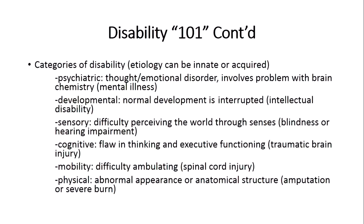And then there are physical disabilities, which involve abnormal appearance — either an anatomical structure, as in the case of an amputee, or in the case of a severe burn. So those are the six major categories of disability: psychiatric, developmental, sensory, cognitive, mobility, and physical.